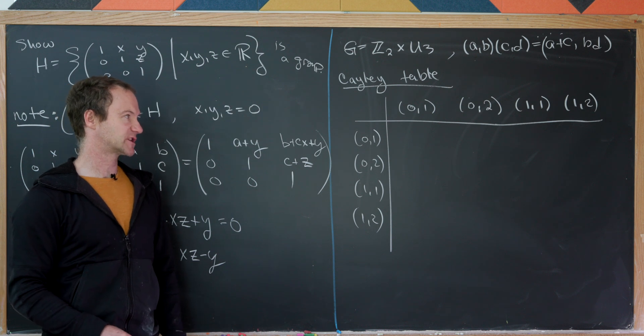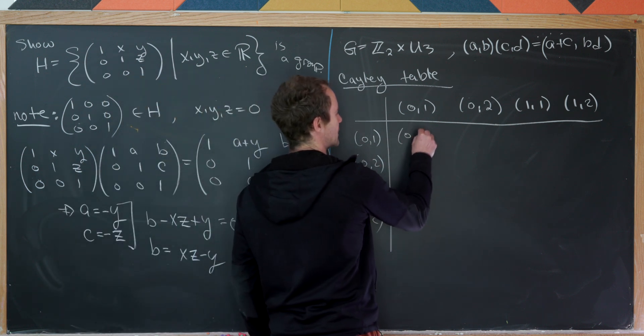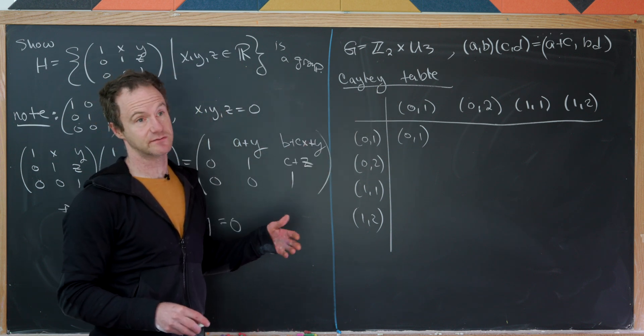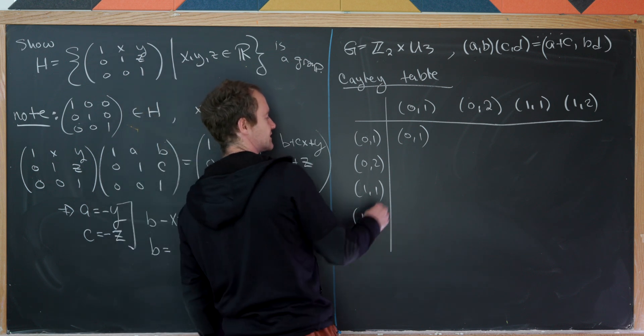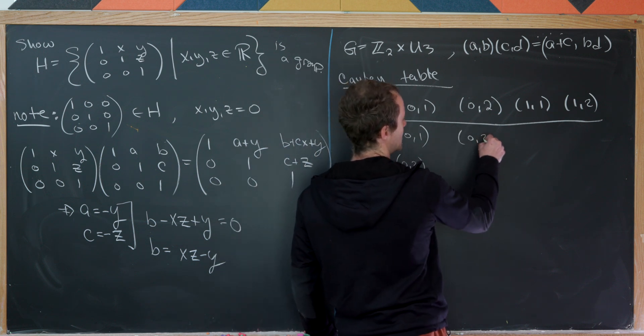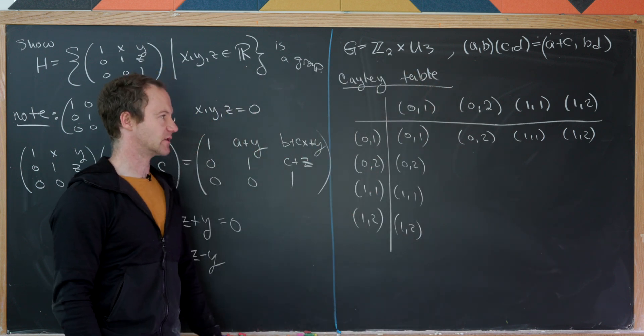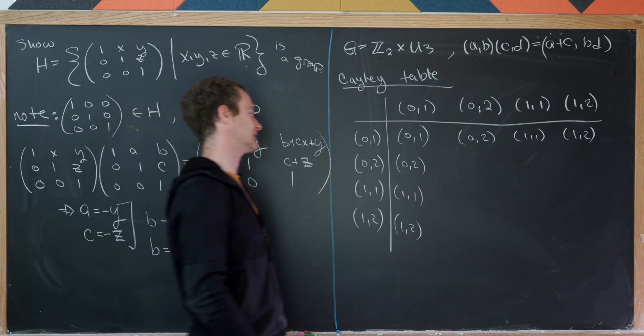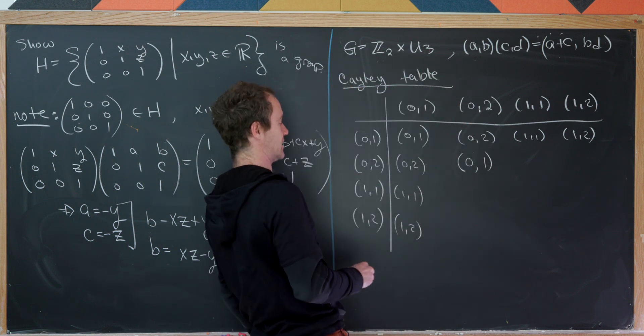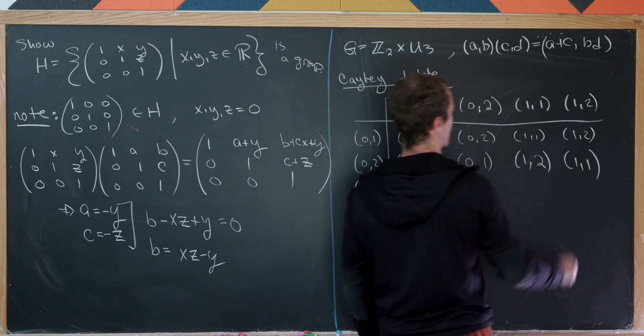So we add in the first component, mod 2, and we multiply in the second component, mod 3. So adding here will give us 0, 1. And in fact, this is the identity element, because multiplying by 1 gives us no change at all, and adding 0 also gives us no change. So we can easily fill in this first row and this first column without much issue. So there we have it. And now let's operate by this 0, 2. So remember, adding in the first component, multiplying in the second. So we'll have 0 plus 0, which is 0. 2 times 2, which is 4, which is 1 mod 3. 0 plus 1 is 1. 2 times 1 is 2. And then here we'll have 1, 1 similarly.